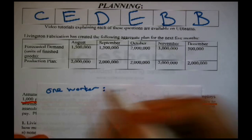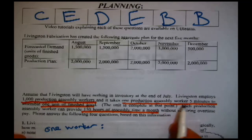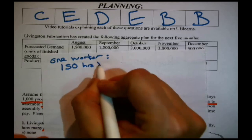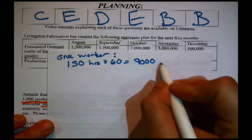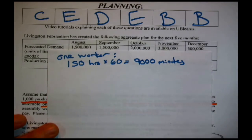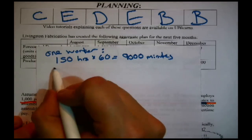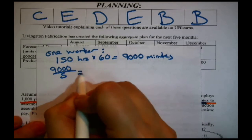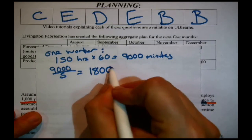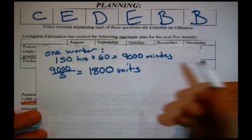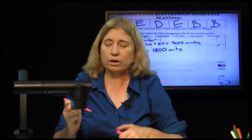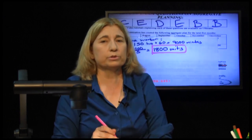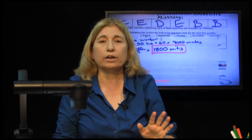One worker can produce 1 unit in 5 minutes, and one worker gives you 150 hours a month. So 150 hours times 60 — I want to know how many minutes that is — that's 9,000 minutes. Since it takes 5 minutes to make one unit, 9,000 divided by 5 gives 1,800. One worker can produce 1,800 units per month without working any overtime.